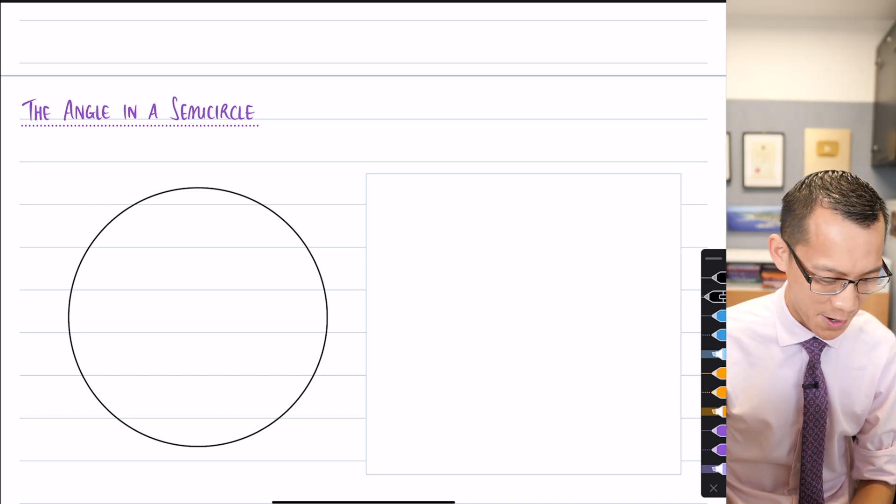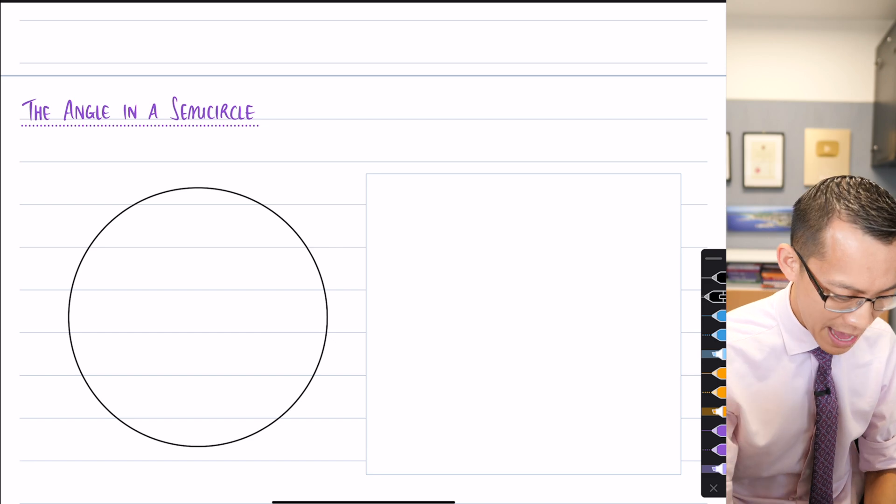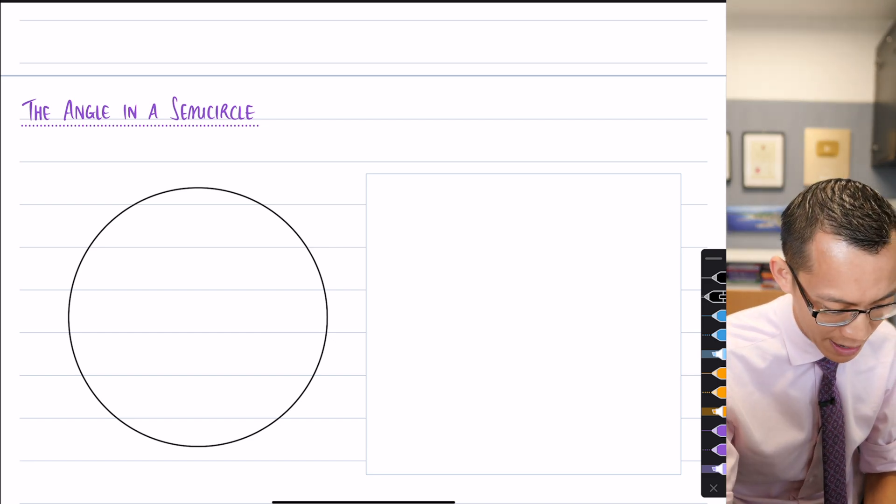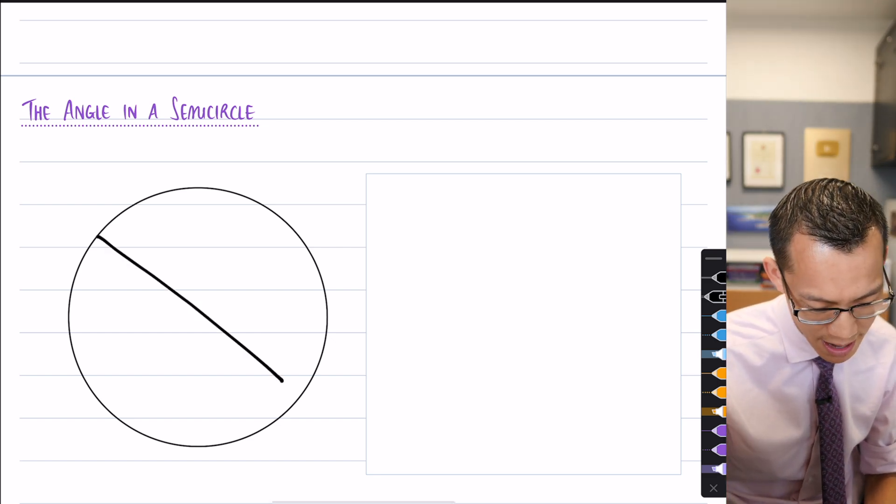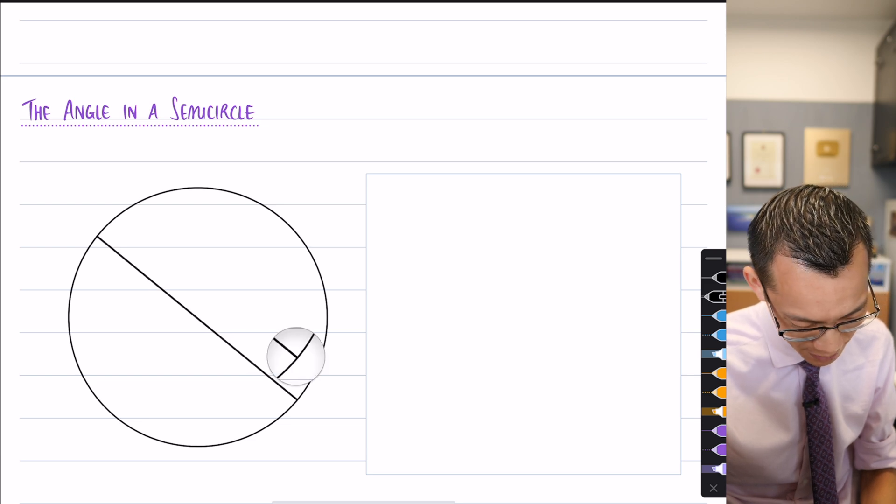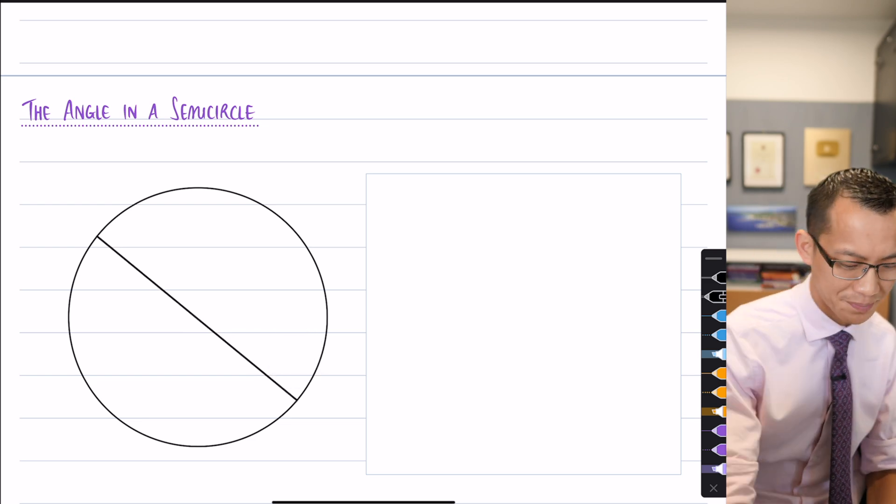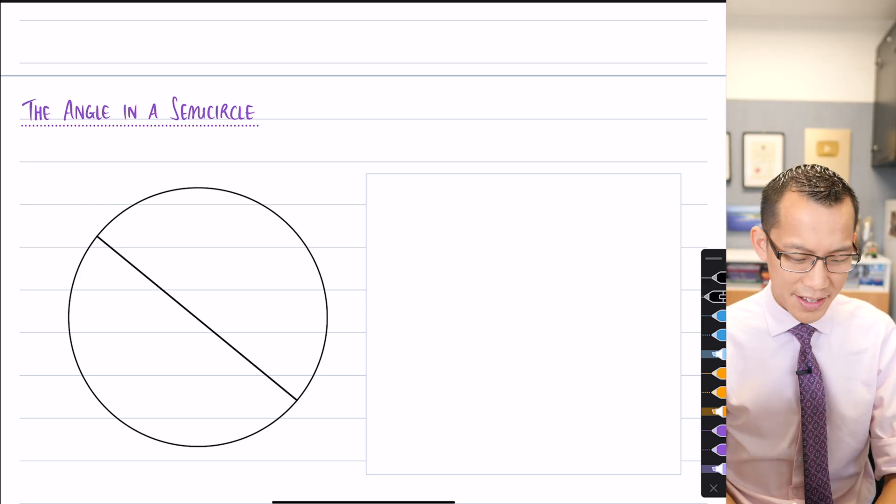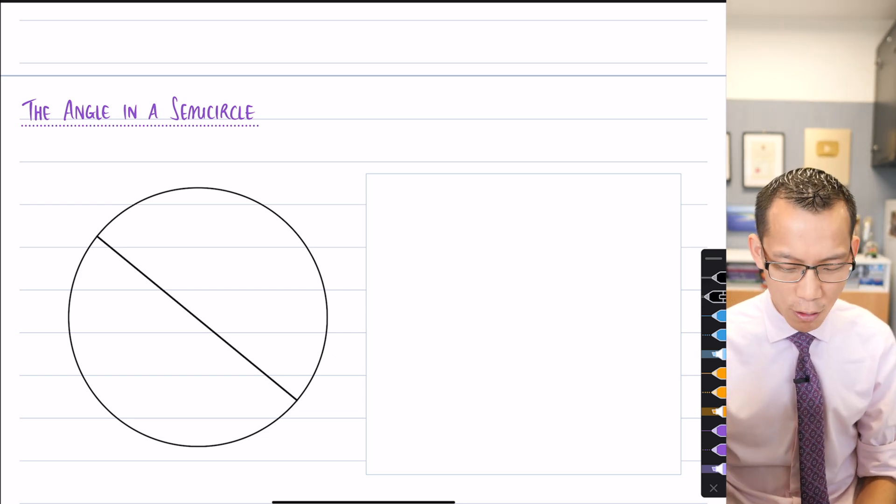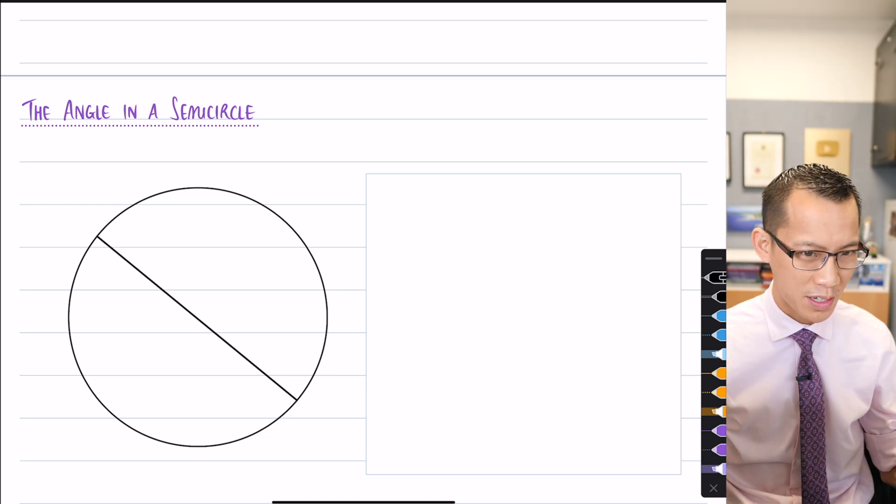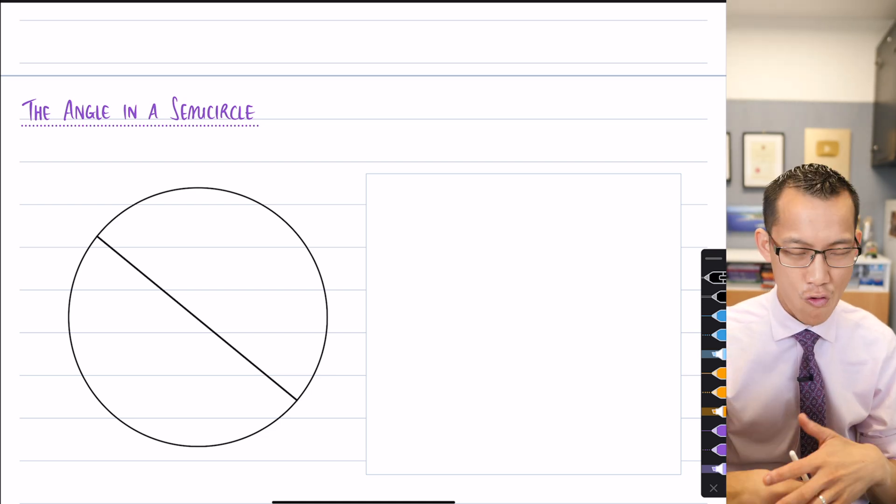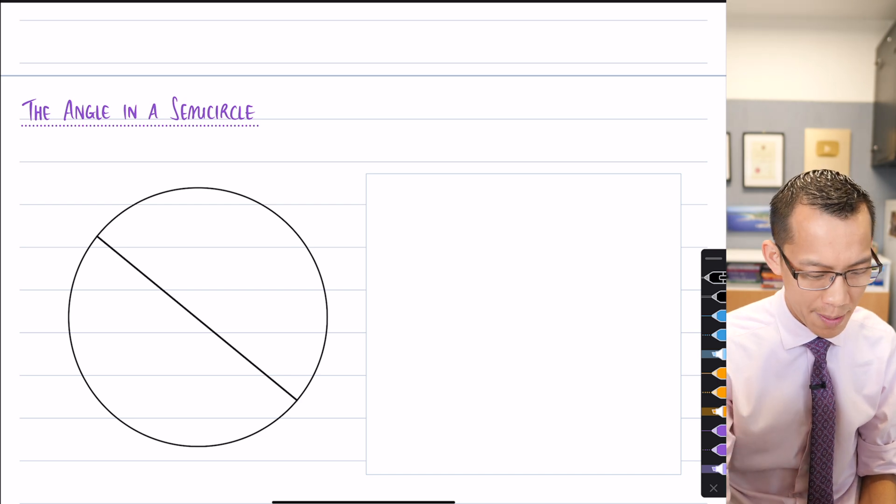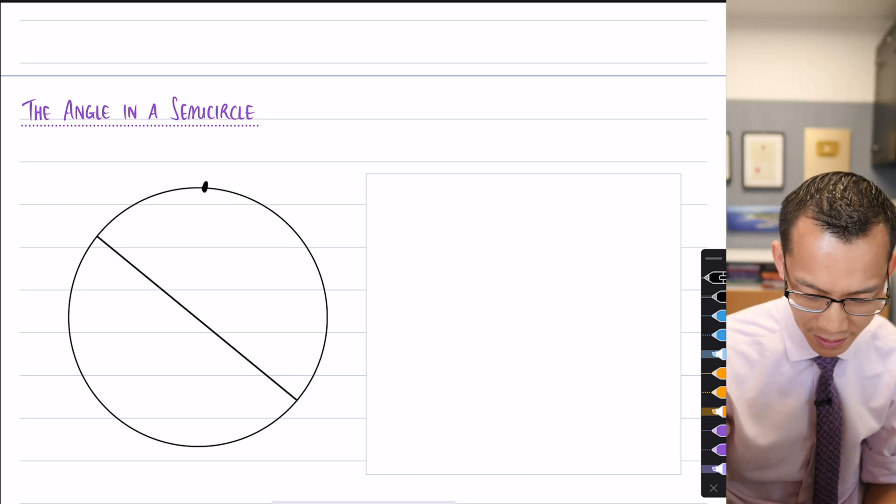This property is called the angle in a semicircle because if you take your circle and then just slice it in half any way you like, I'm going to find a spot and then I'm going to draw a diameter. Now what's great is if you draw this diameter and now find any point on the circumference, just literally randomly pick a point on the circumference. I'm going to put one up here.